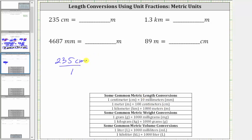Because we have centimeters in the numerator here and we want centimeters to simplify out, we need to have centimeters in the denominator and meters in the numerator. Since one meter is equal to 100 centimeters, the unit fraction is one meter over 100 centimeters.